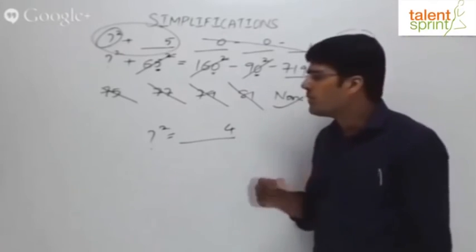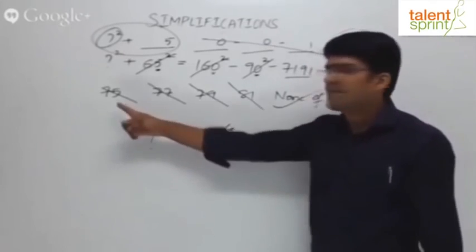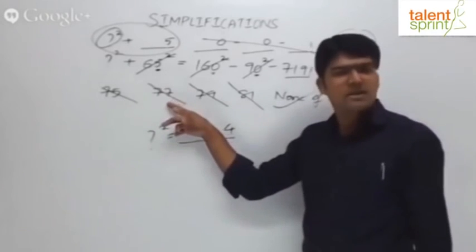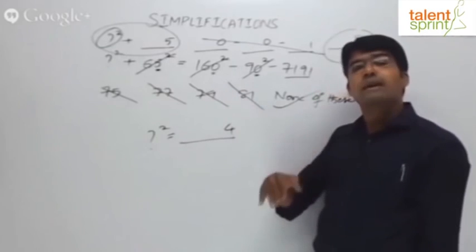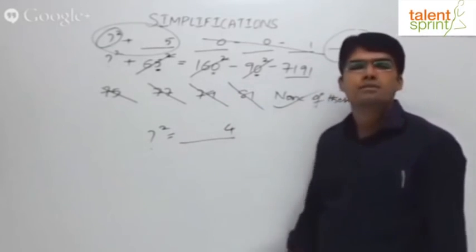You have got the right answer without doing the complete calculation. So this is how unit space method will help you get to the point. I know that the answer should end in 4. 75 squared doesn't end in 4, 77 squared doesn't end in 4, 79 squared doesn't end in 4, 81 squared doesn't end in 4. What ends in 4 here? Should be the option none of this.